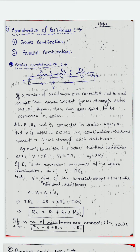Hello students, welcome to class 12 physics class. Today we discuss the combination of resistances — that is already covered in class 10 — just once we revise these things in today's class. So we know that we have two types of combination: one is a series combination and another one is a parallel combination. So first, for series combination.